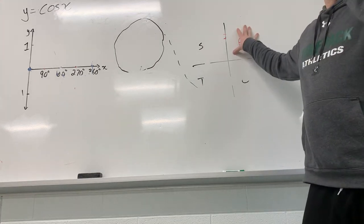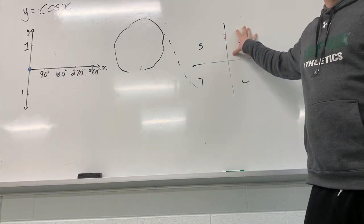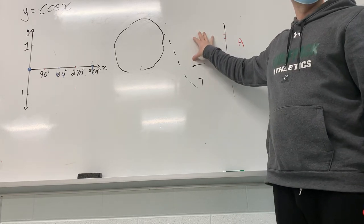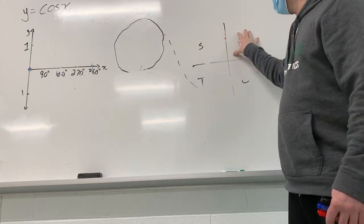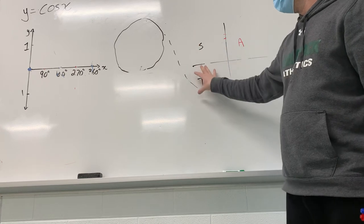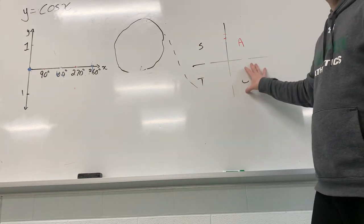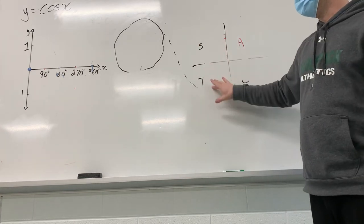So let's see if you guys can think about this. Cosine is positive or negative in quadrant 1? Positive. Okay, what about quadrant 2? Negative. So we're going to go positive, negative, then negative, positive. So it goes positive, negative, negative, and then positive.